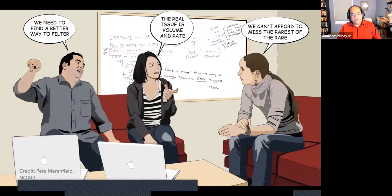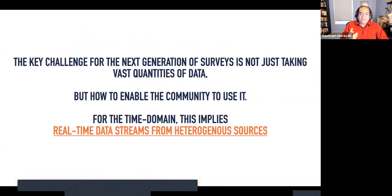So we need to, going forward, find a better way to filter. This is a cartoon that Pete Maronfield drew when I was at NOAO when a postdoc. The real issue is volume and rate. And you are trying to find objects that are common, but also be able to identify extremely rare sources. The key challenge then is not just building a survey that gets better data, bigger instruments, bigger facilities that go deeper. It's to really figure out how to get that data to the community quickly to use it.